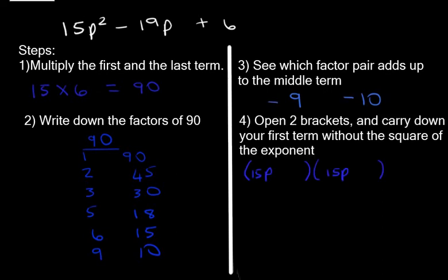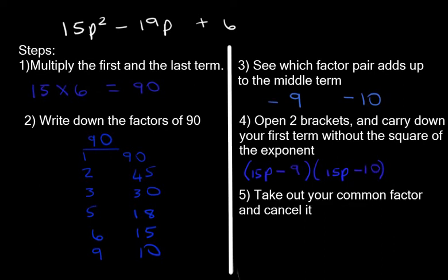So now what we do is we open two brackets and carry down the first term of the expression without the square of the exponent. In other words, 15p and 15p. We write it in both brackets. And now we're going to add negative 9 and negative 10. So now we take out our common factor and we are going to cancel it. What's common in the first bracket? If there is no common factor, there's no need to take anything out. But does the first bracket have a common factor? Yes, it does. The common factor is 3.